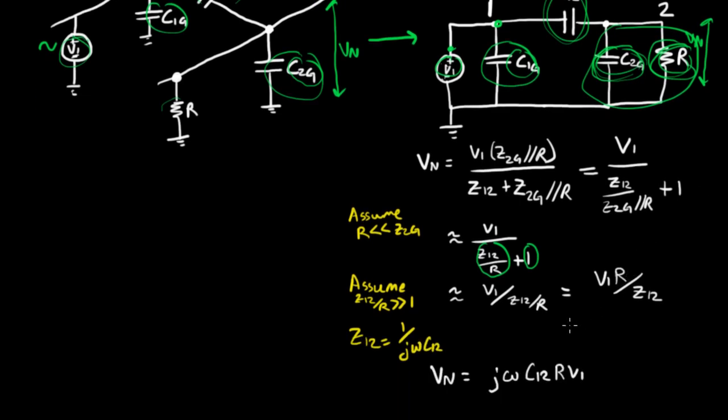Now we know that the impedance of a capacitor is going to be 1 over jωC, and so Z sub 12 is going to be equal to 1 over jωC sub 12. And finally, we have the expression that we're interested in. The noise voltage is going to be equal to jωC sub 12 times R times V1.